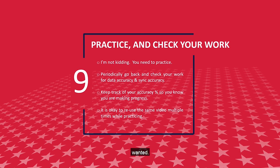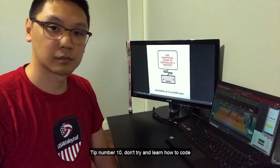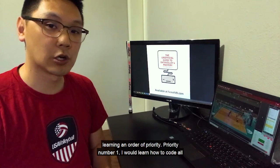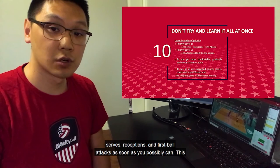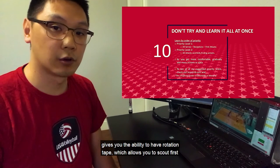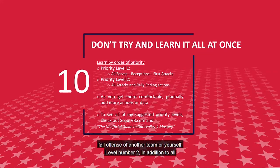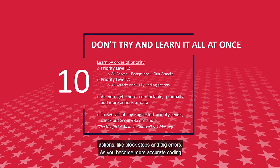Tip 10: don't try and learn how to code everything all at once — this can get really overwhelming. I would suggest learning in order of priority. Priority 1: learn how to code all serves, receptions, and first ball attacks as soon as you possibly can. This gives you the ability to have rotation tape, which allows you to scout first ball offense of another team or yourself. Level 2: in addition to all serves, receives, and first ball attacks, capture all attacks and rally ending actions like block stuffs and dig errors. As you become more accurate coding levels 1 and 2, you can start to add more information as you go along.